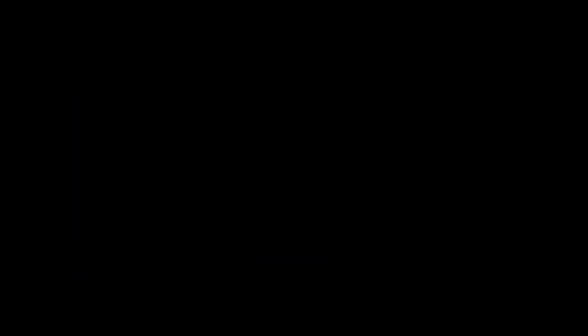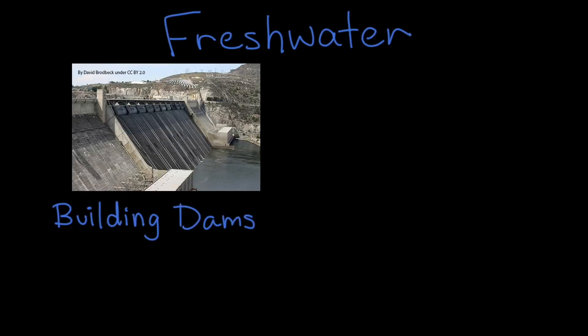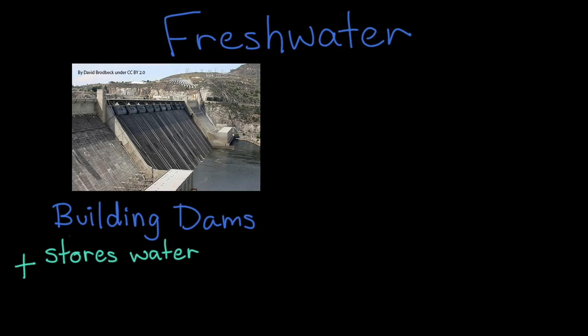Even renewable resources can be affected by human actions. Take fresh water, for example. People may redistribute fresh water on the surface by building dams across rivers or other waterways. Dams store water for communities to use, and some even act as renewable hydropower generators, converting the kinetic energy of running water into electricity.